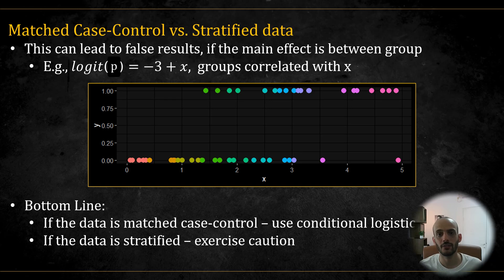This can lead to false conclusion. For example, if the data actually came from a simple marginal model as depicted here, and the groups are correlated with x, conditional logistic regression would fail to detect a significant effect. So the bottom line is, if the data truly comes from a matched case control study or some other design that is similar to this, you should use conditional logistic regression. But if the data is merely stratified, in my humble opinion, you should exercise caution and consider checking multiple models. At the very least, be aware that you are implicitly assuming weak or non-existent between group effects.